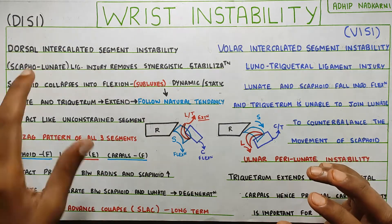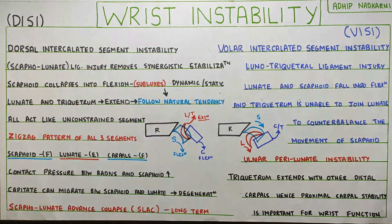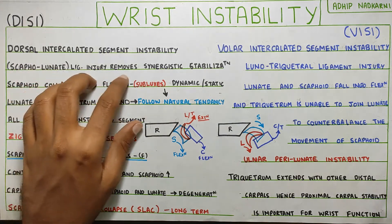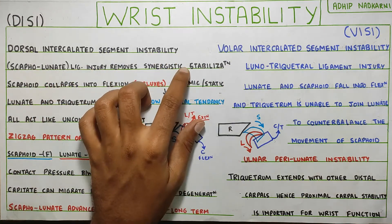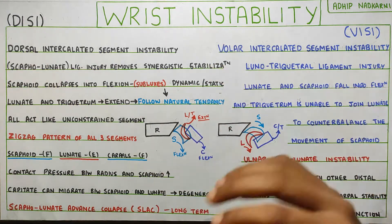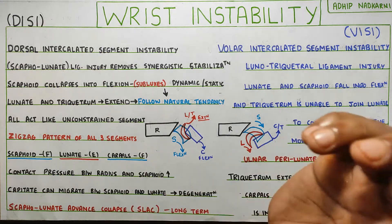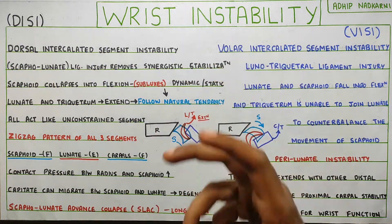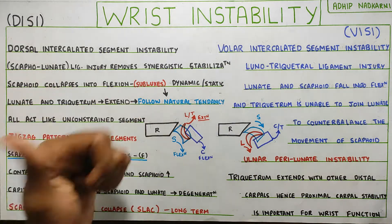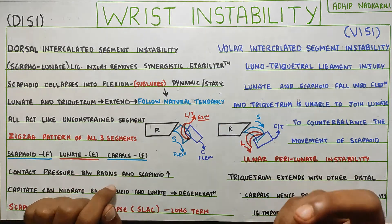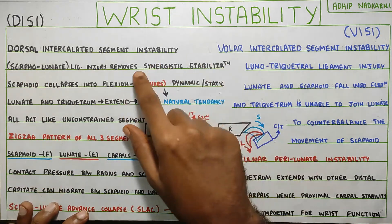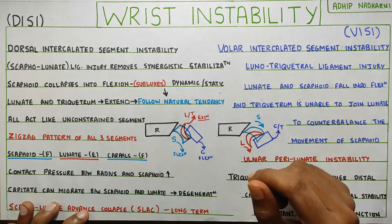Let's start with dorsal intercalated segment instability. Here, your scapholunate ligament is injured, which removes the synergistic stabilization. The scaphoid, capitate, lunate, and triquetrum normally stabilize and move together in flexion, extension, and radial and ulnar deviation — that is the normal kinematics of the proximal carpals. Once the scapholunate ligament is injured, it removes or reduces this synergistic stabilization.